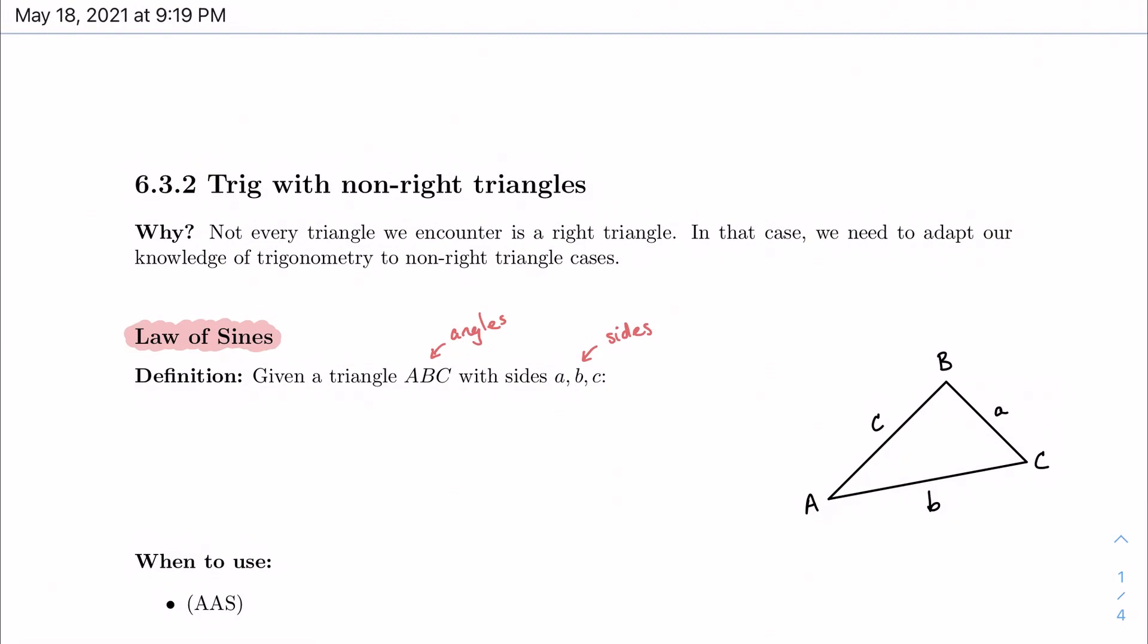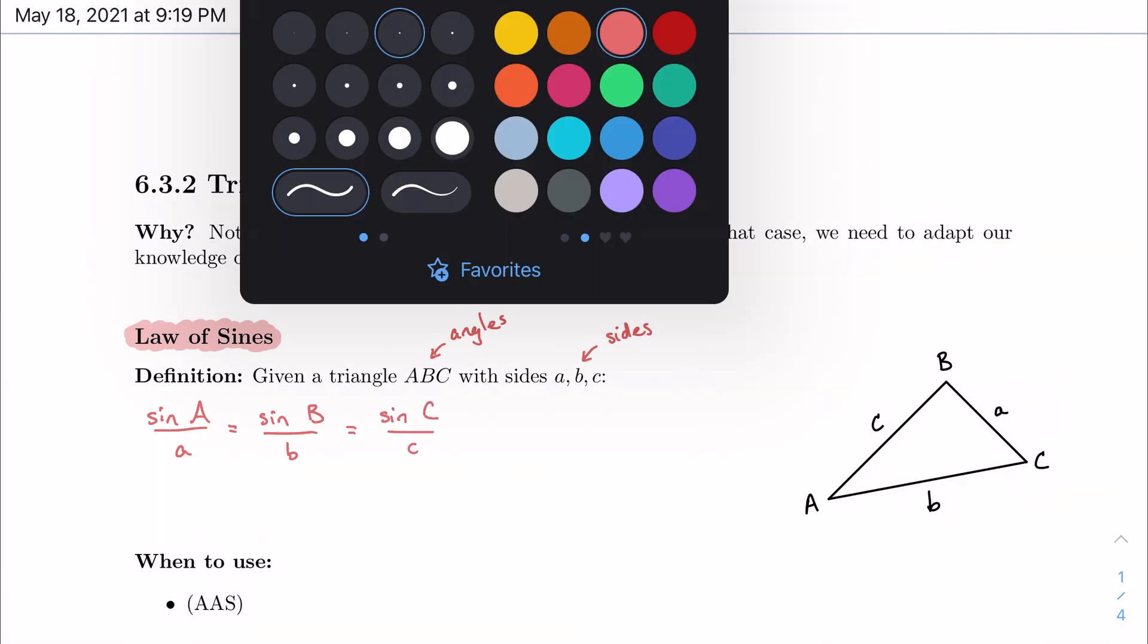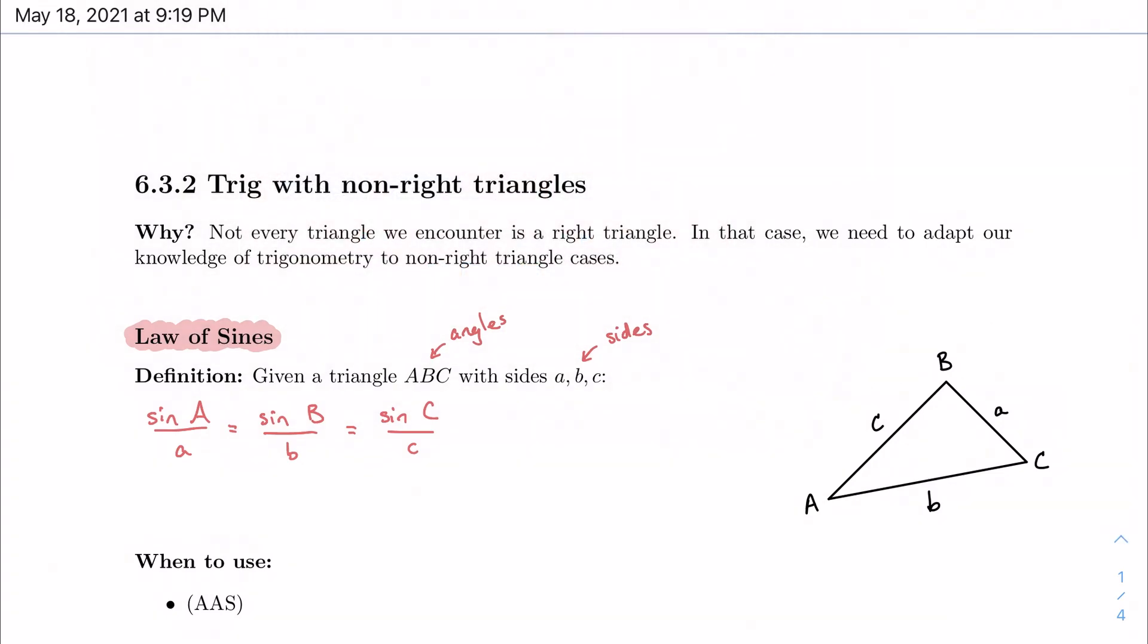The way this works with the law of sines is that it happens that the ratio of the sine of an angle to its opposite side is equal for any side and opposite angle. So sine A over A is equal to sine B over B is equal to sine C over C. And our book, and definitely other resources, will show this in reverse - they'll show it upside down as A over sine A equal to B over sine B equal to C over sine C.